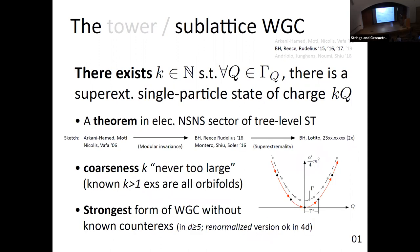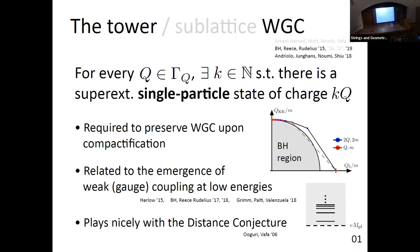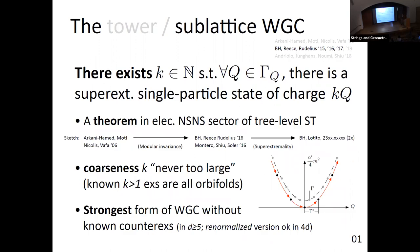The sub-lattice weak gravity conjecture is yet another rearrangement. Instead of having — for every site in the charge lattice — some integer whose multiple is super-extremal, we take this integer outside and say it is a property of the theory. They call it the coarseness. So there's some single integer k such that k times any charge has a super-extremal particle of that charge.